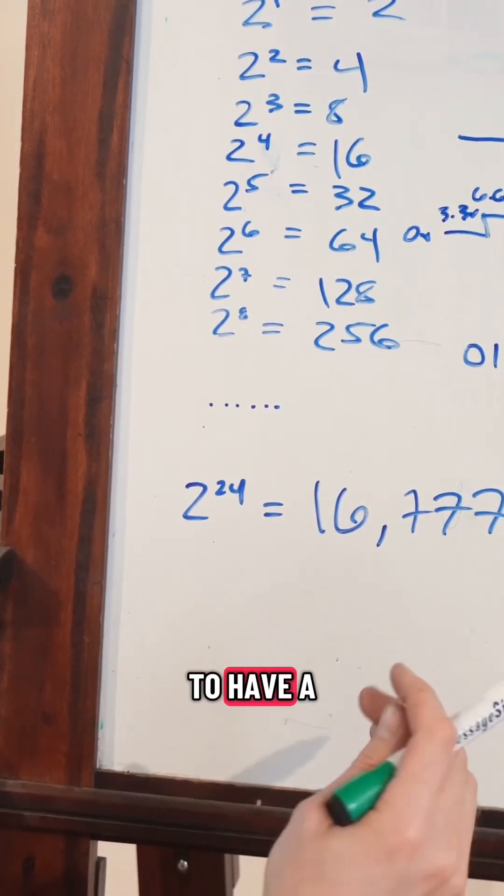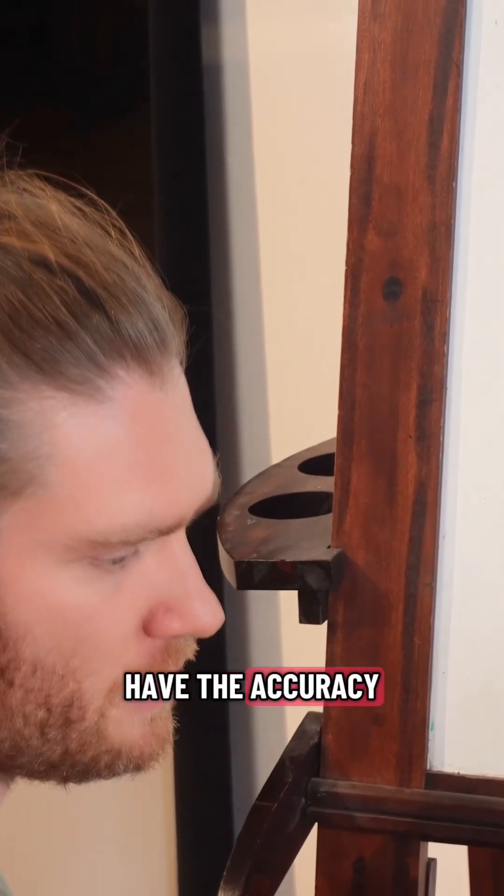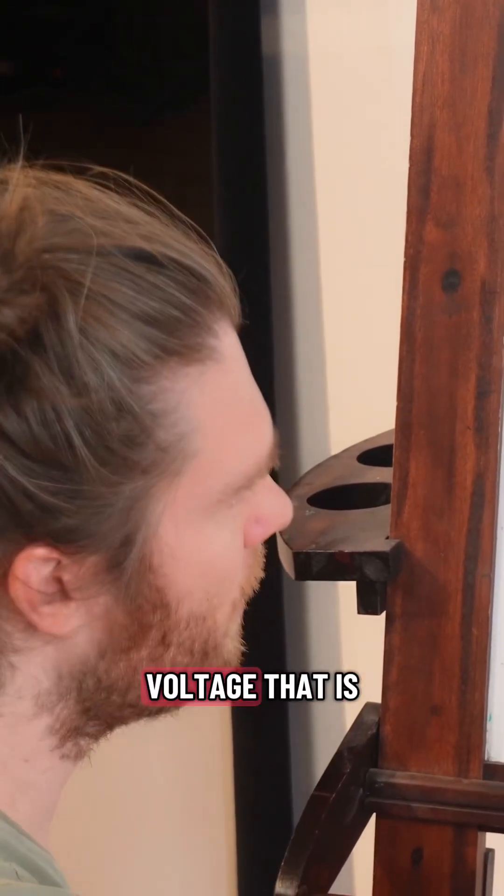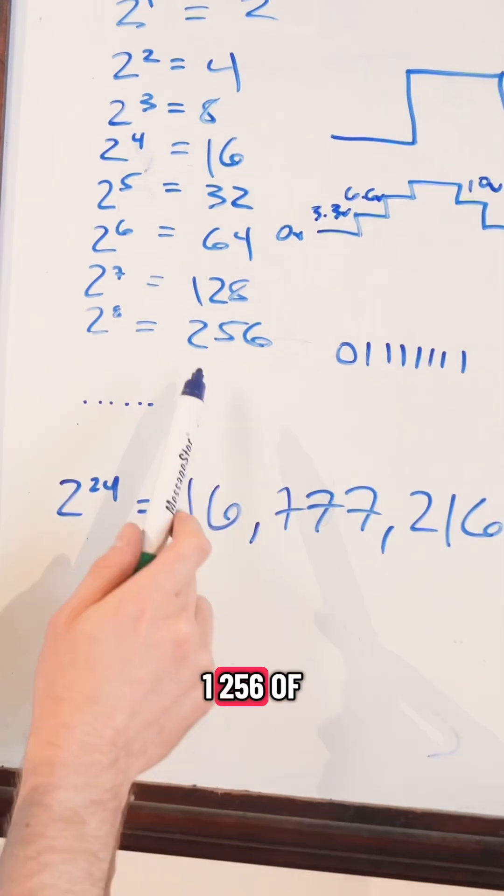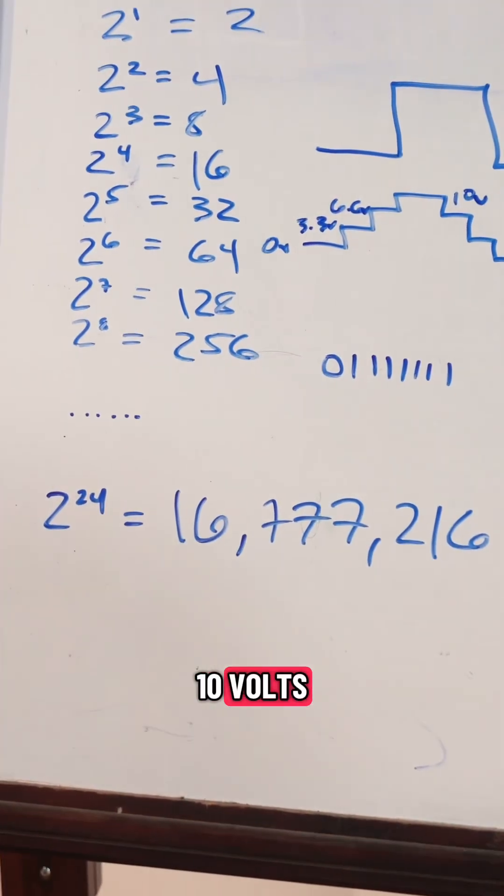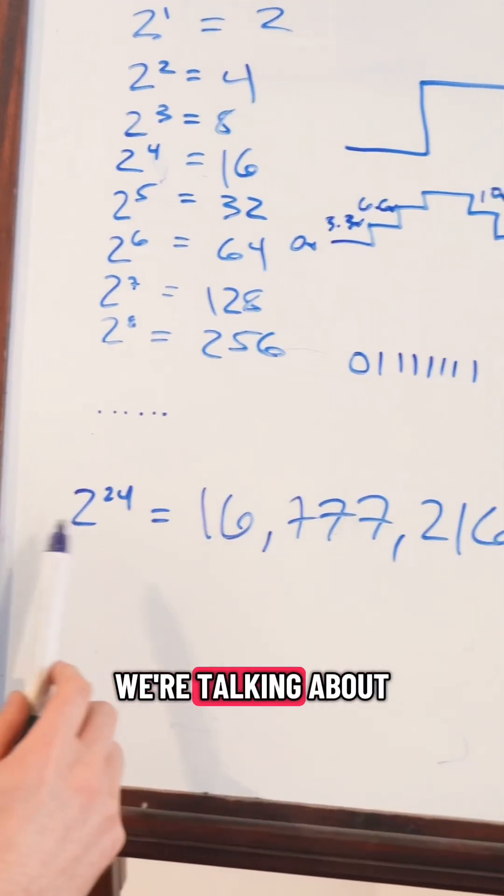So we need to have a component that can have the accuracy to output a voltage that is one 256th of 10 volts. So now imagine we're talking about 24 bits.